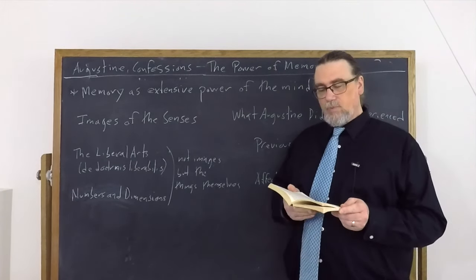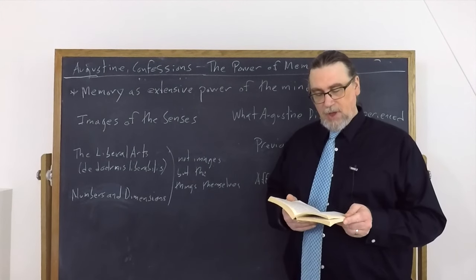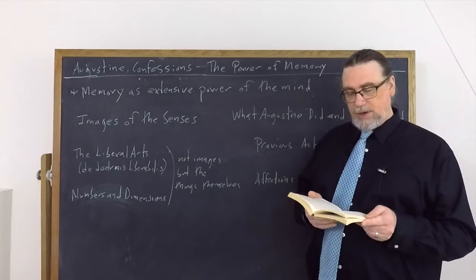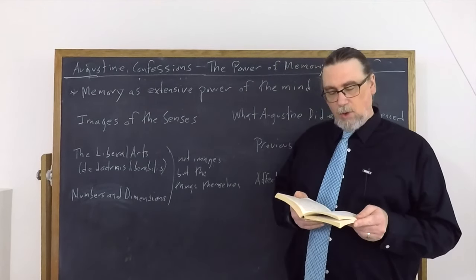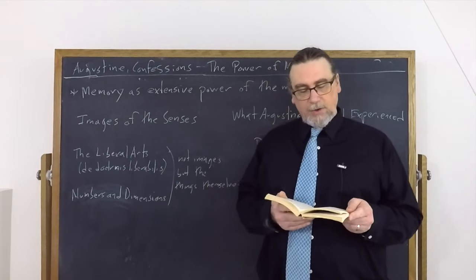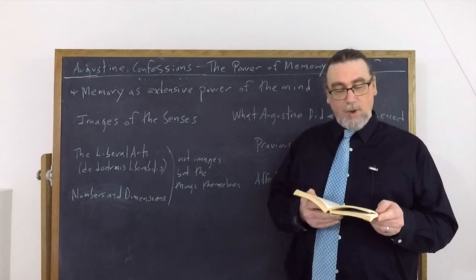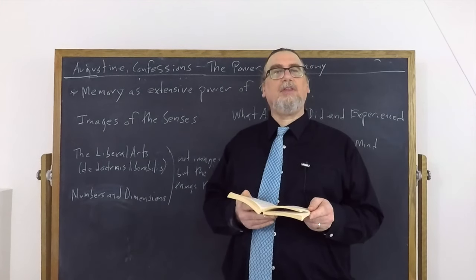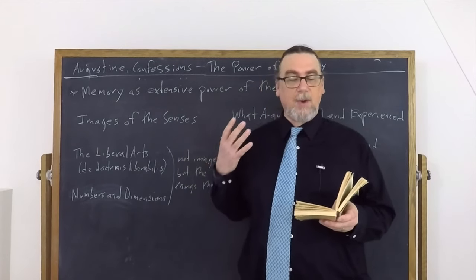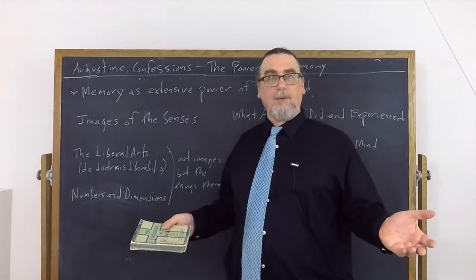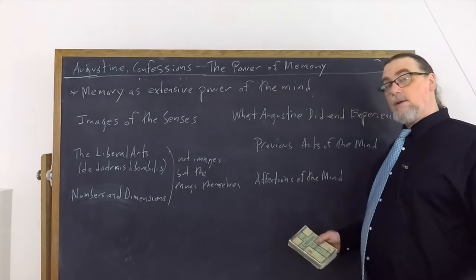And sometimes they can get jumbled. He says certain things are asked for and others rush forth in mobs and they can get in the way. And he says, all as light and all colors and bodily shapes are coming through the eyes, varieties of sound through the ears, odors by the portal the nostrils, taste by the portal the mouth, by the sense diffused throughout the whole body. What is hard, what is soft, what is cold or hot, what is smooth or sharp, heavy or light, whether inside or outside of the body, the great cave of memory. And I know not what hidden and inexpressible recesses within it takes all these things, all these things that are coming from the senses to be called up and brought forth when there is need for them. All these enter in each by its own gateway and are laid away within it. So a good portion of what we've got are these sensory images put together in different ways.